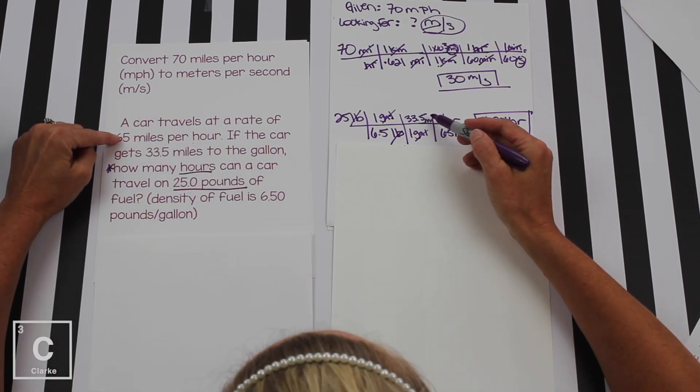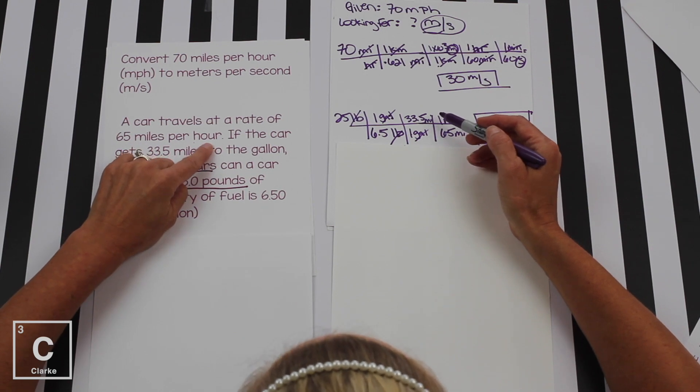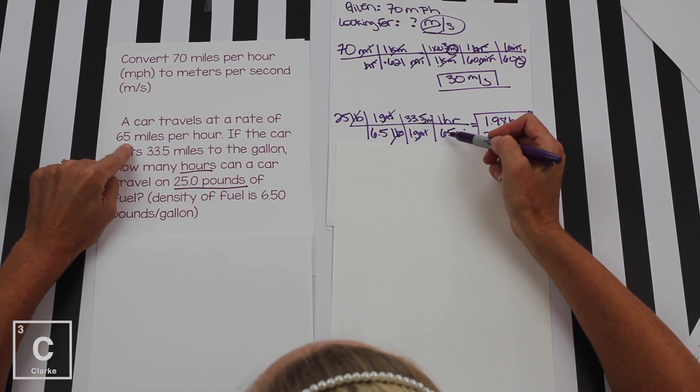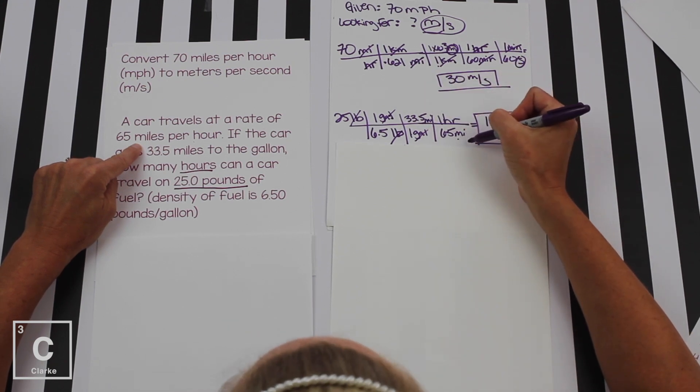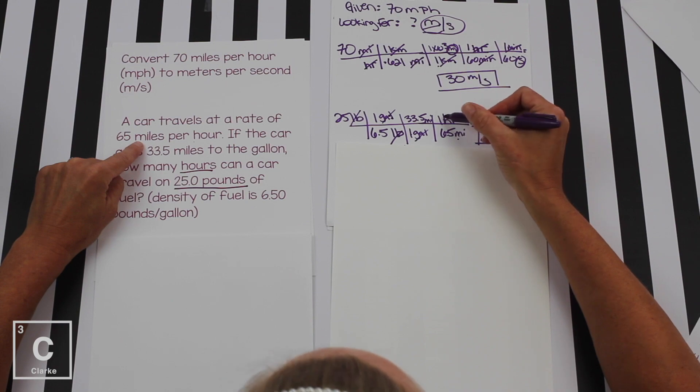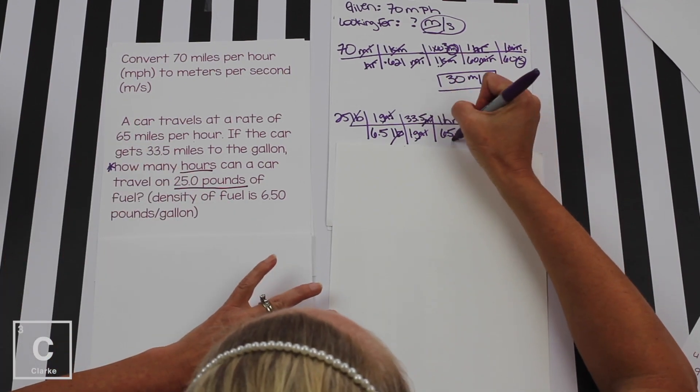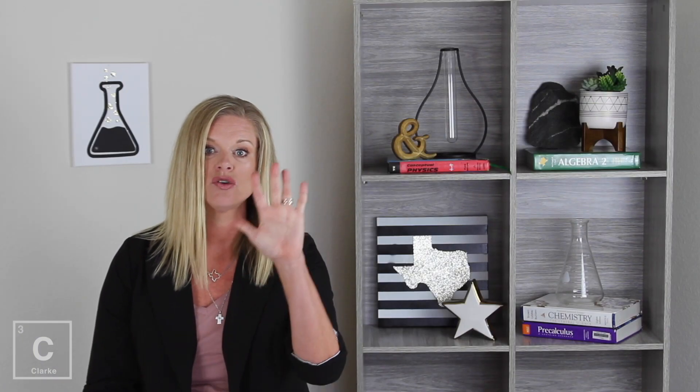There's only one left. And thank goodness it does have miles and it has hours, and that's what we're trying to solve for. So we're going to put this, but make sure we orient it correctly. Miles was on top, so we bring miles on bottom. 65 is closest to the miles, so 65 stays with miles. And then we put the one hour on top. Once we cancel out these miles, we have hours left. We're looking for hour. We've got hour on top. That's how we know to stop.